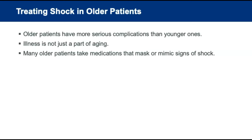Older patients generally have more serious complications than younger patients. Many older patients take numerous medications that could mask or mimic signs of shock. Treating pediatric or geriatric patients in shock is no different than treating any other shock patient. Provide inline spinal stabilization if indicated; otherwise maintain a position of comfort. Control life-threatening hemorrhage immediately with direct pressure, suction as necessary, and provide high-flow oxygen via non-rebreather mask. Maintain body temperature and transport rapidly.